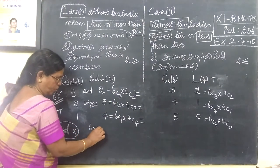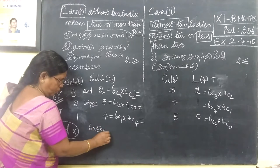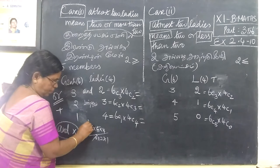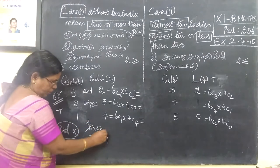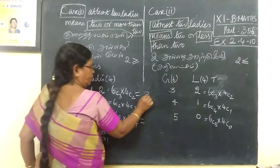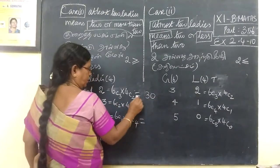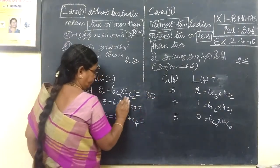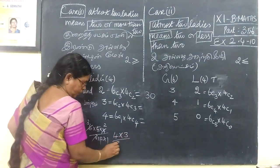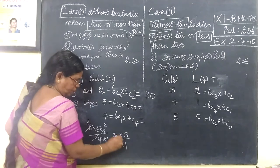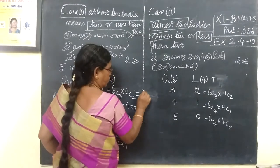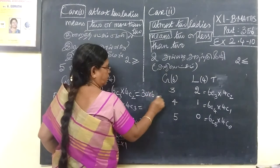6 into 4 into 5 into 4, by 3 into 2 into 1, and 3 into 2 into 1. 5 into 10, then 10 into 10. Here is 30. 4 into 4 into 3, by 2 into 1. This is 30 into 2. So 30 into 6.